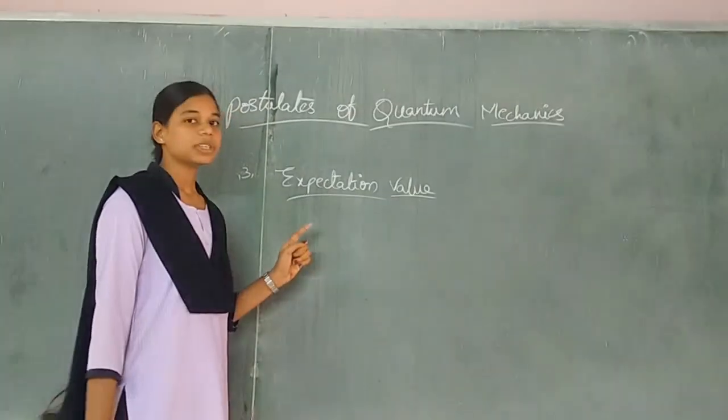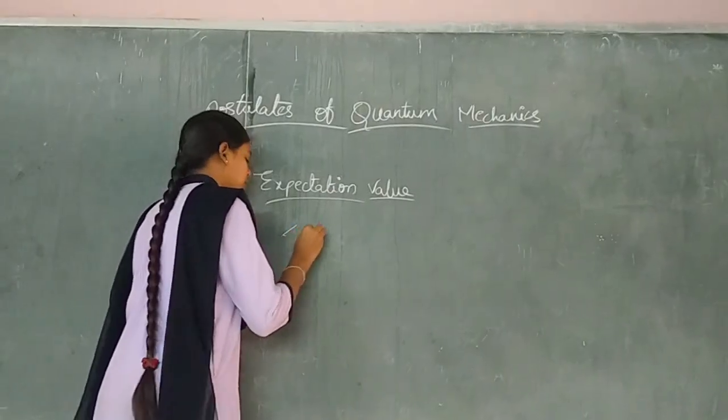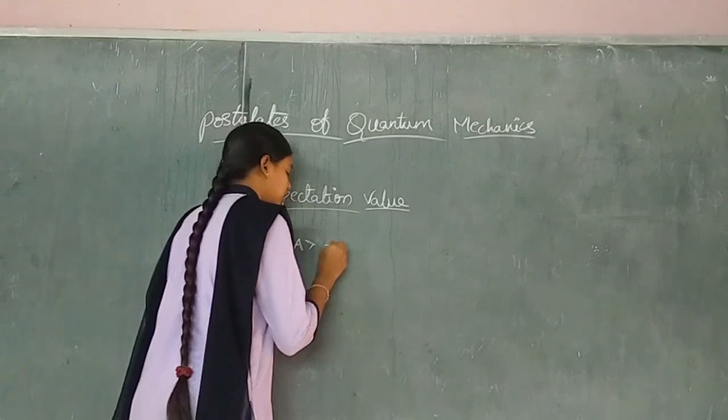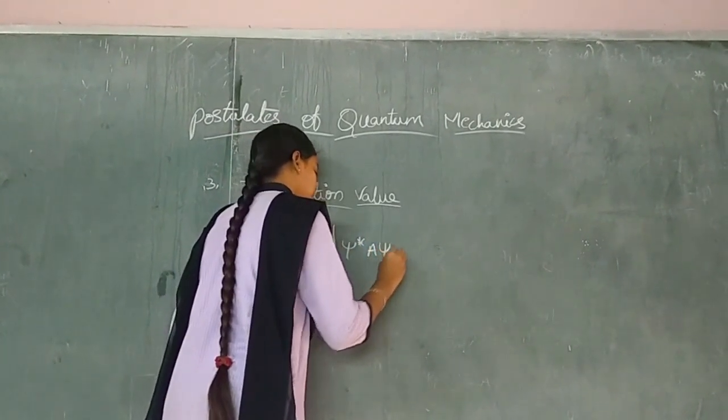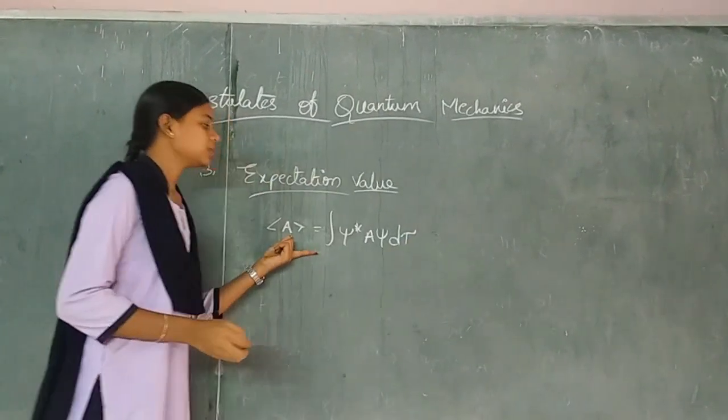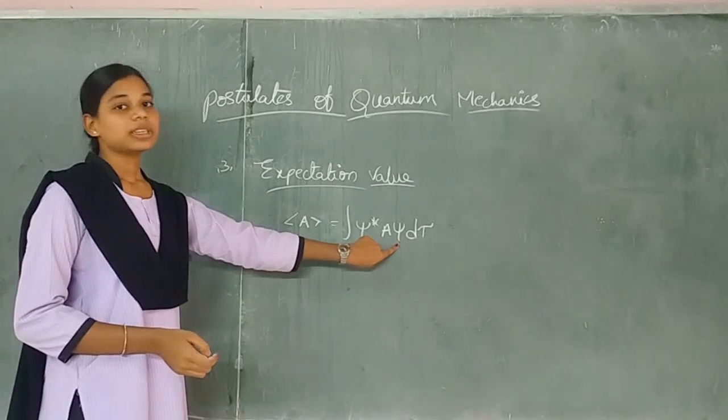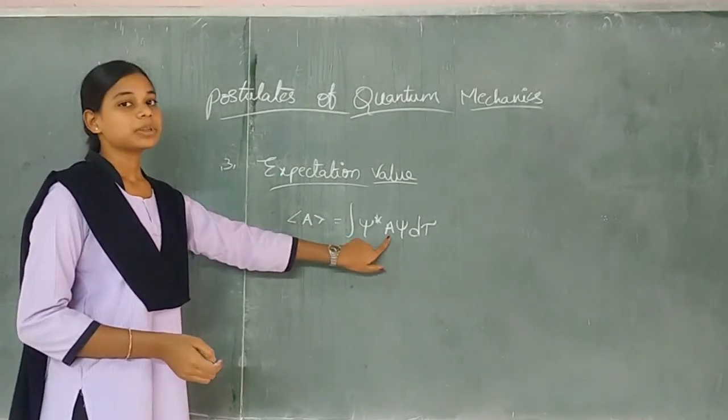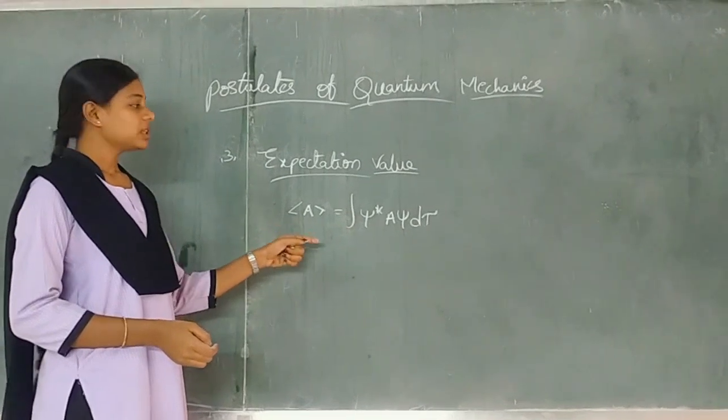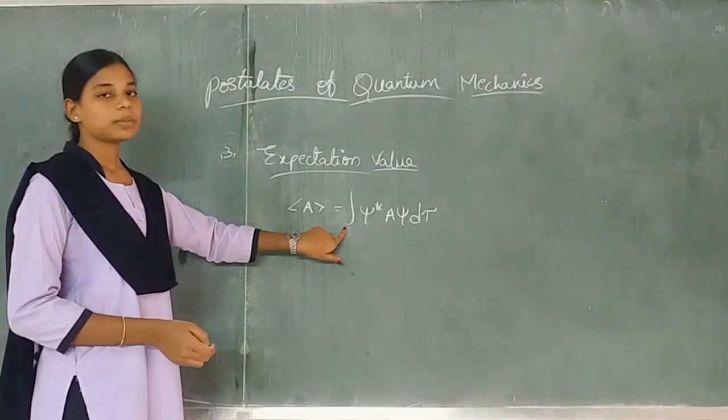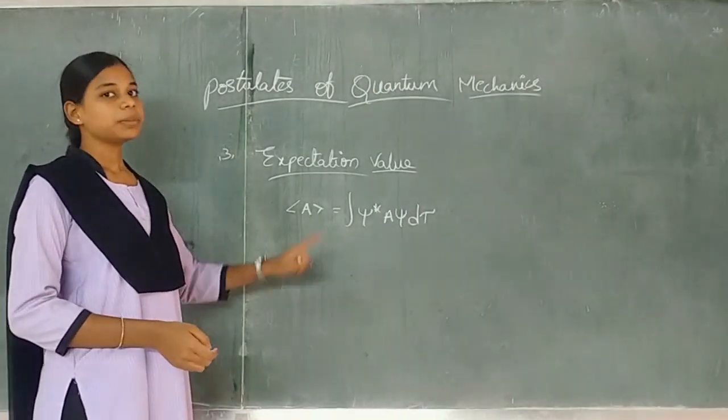Third one, which is the expectation value. Expectation value equation represents psi star, psi. Expectation value all the way to sandwich out the way. Each wave function needs to normalize. Expectation value, the equation. We need to normalize to calculate expectation value properties.